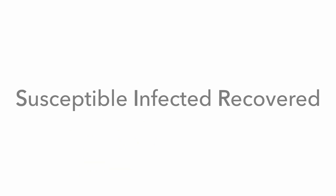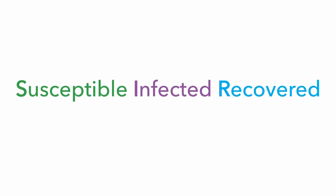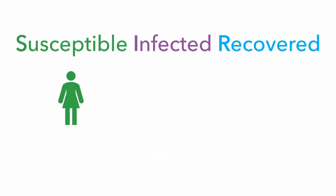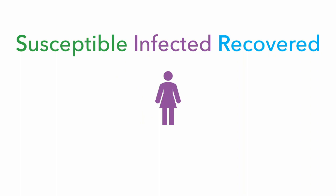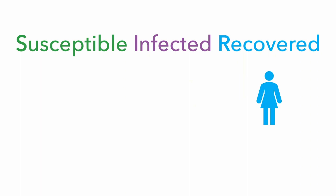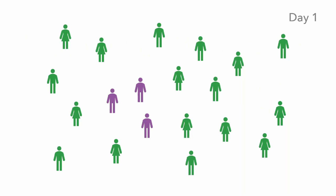Behind the scenes, this works through an epidemiological model called Susceptible, Infected, and Recovered. Any given person being evaluated can be in one of these three states. If you're susceptible, you're a healthy individual who has not received COVID-19 and is susceptible to receiving it. An infected individual is one who is currently infected and can infect others. A recovered individual has gone through the infection, recovered, and for the model's purposes, we assume they cannot receive COVID-19 again.